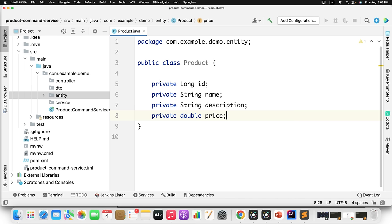There's no rule that the entity structure in command and query services must be the same. Whatever fields you want to query, only those need to be persisted in the query database. For example, the command service might have 100 fields, but you only need to send to the query service the fields you want to display to the user. This is one of the advantages of CQRS — you can design your schema your own way to avoid complex queries.